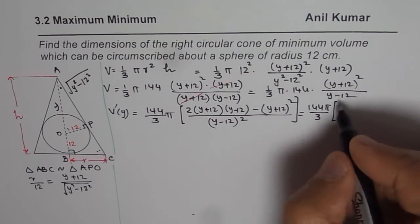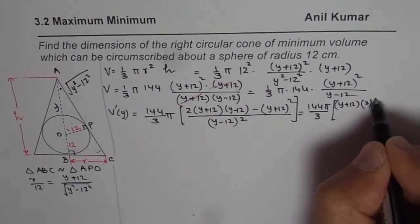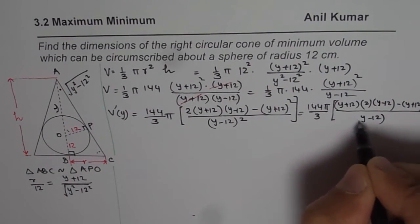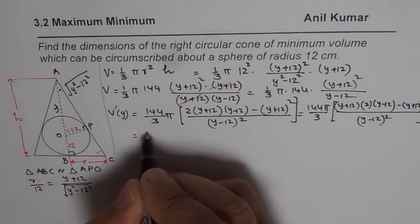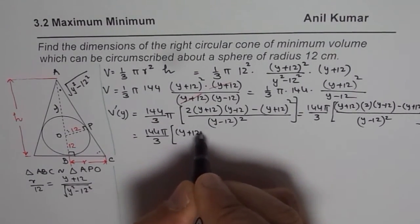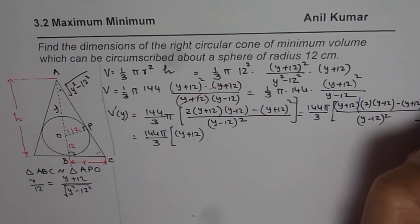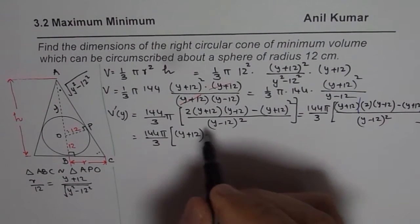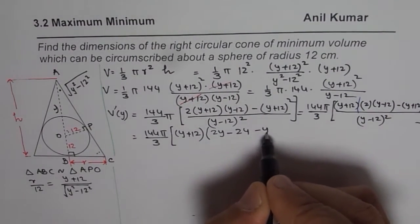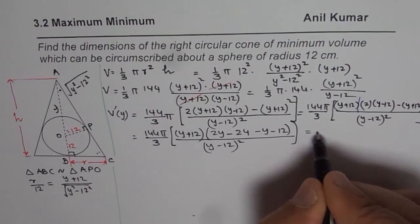Taking Y plus 12 as a common factor from the numerator, inside the brackets we get 2(Y minus 12) minus (Y plus 12), which expands to 2Y minus 24 minus Y minus 12, simplifying to Y minus 36. So the derivative equals 144 pi over 3 times (Y plus 12)(Y minus 36) divided by (Y minus 12) squared.